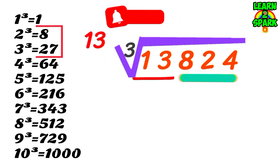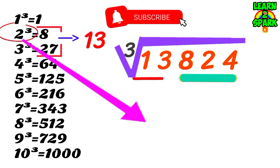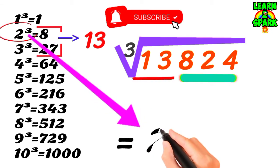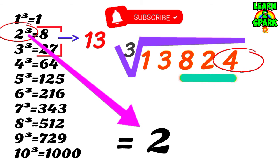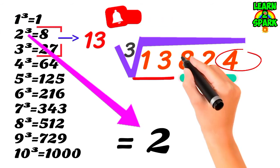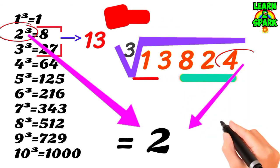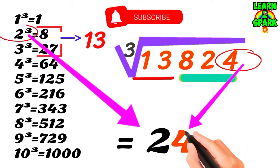Consider the first group which contains 13, which falls between 2 perfect cube numbers 8 and 27. Now find the root of the smallest number, that is 2 here, and bring it down for your final answer. Now consider the units place, that is 4, which will directly come down as it never changes. So your final answer is 24.